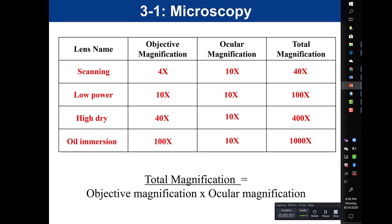That is the highest these microscopes go. When looking at bacteria throughout the semester, bacteria are extremely small, so you would almost always use your oil immersion lens. You'll learn more about the size of bacteria in lecture.